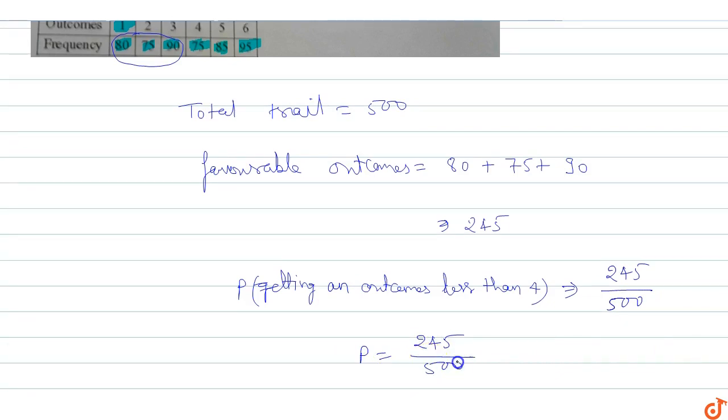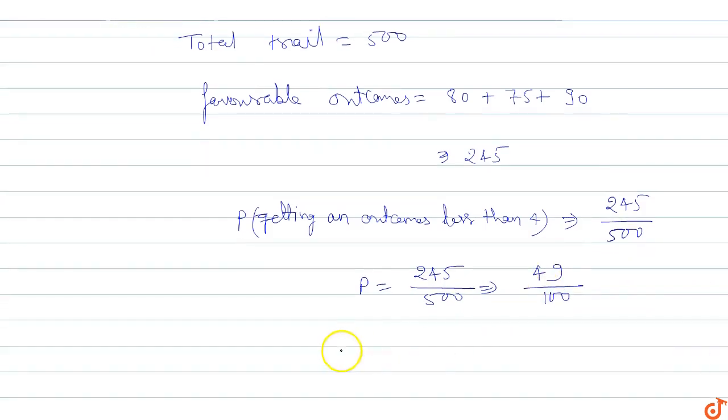Simplifying, 245 upon 500 equals 49 upon 100, which equals 0.49. So the probability P of getting an outcome less than 4 is 49/100 or 0.49.